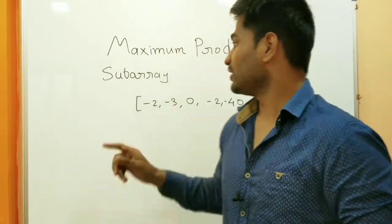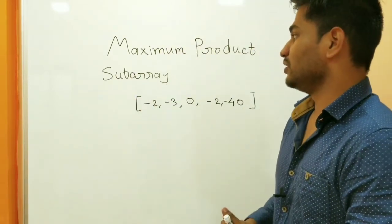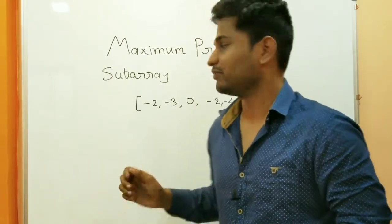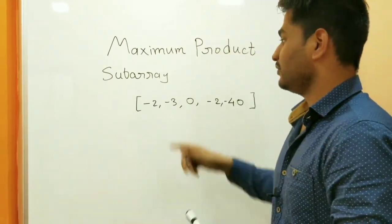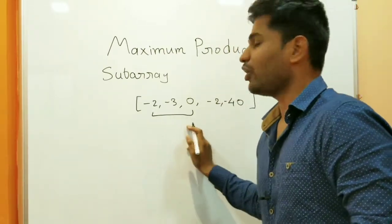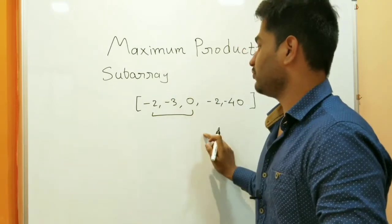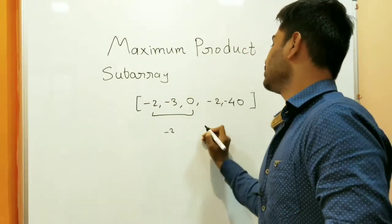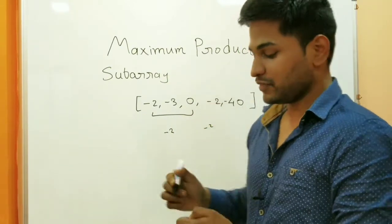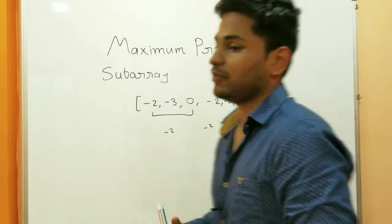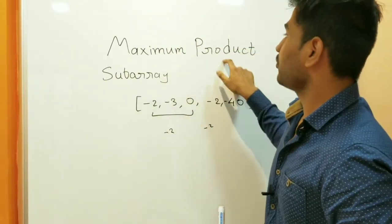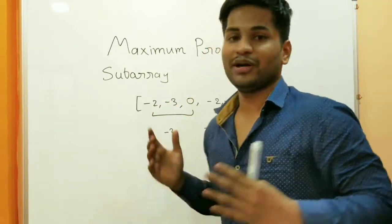In my previous video I already discussed what a subarray is. A subarray is a snippet taken from the array without breaking in between. If you skip elements in between, it is not a subarray. So now the question is: find the maximum product subarray in an array.